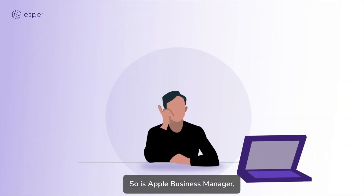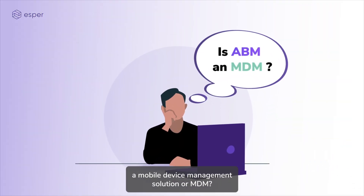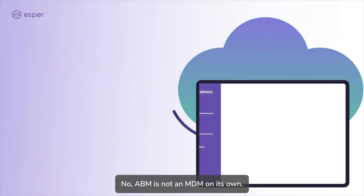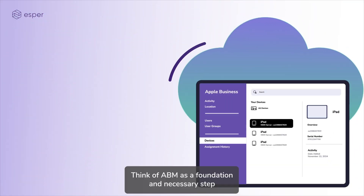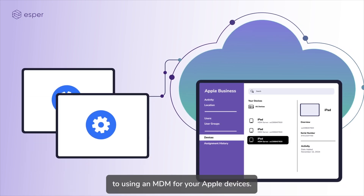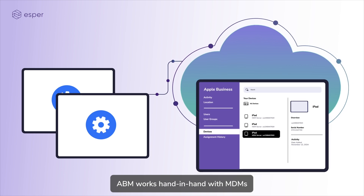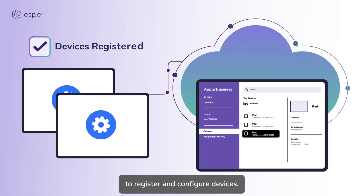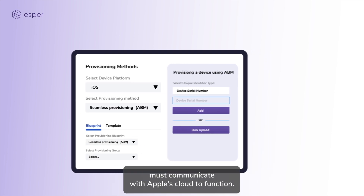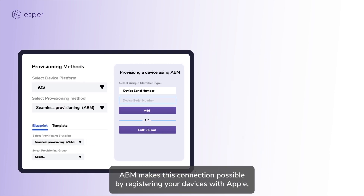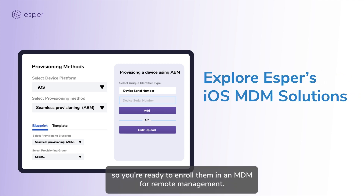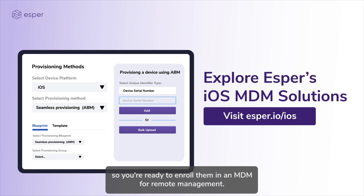So, is Apple Business Manager a mobile device management solution, or MDM? No, ABM is not an MDM on its own. Think of ABM as a foundation — a necessary step to using an MDM for your Apple devices. ABM works hand-in-hand with MDMs to register and configure devices. All iOS MDM solutions must communicate with Apple's cloud to function. ABM makes this connection possible by registering your devices with Apple, so you're ready to enroll them in an MDM for remote management.